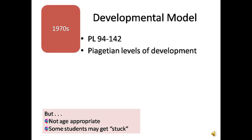At that time, students with significant intellectual disabilities received instruction based on their developmental age. For example, a student who is 18 years old may have been assessed to function at a three-year, two-month age level. So to plan for instruction, students at that level would receive services using Piaget's developmental model. Think about a student with severe disabilities that you may know — many of them would be receiving instruction on skills that are not very age-appropriate, such as pulling a toy across the floor, finding hidden blocks, or imitating sounds.